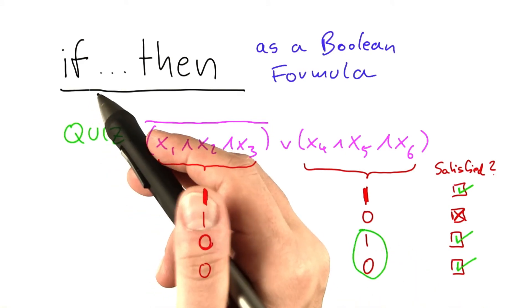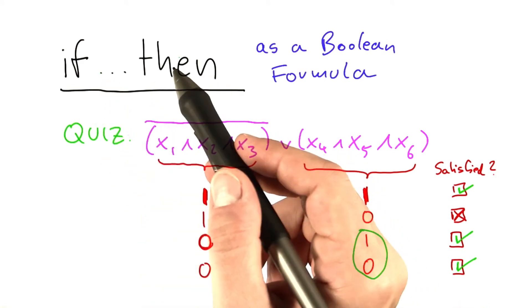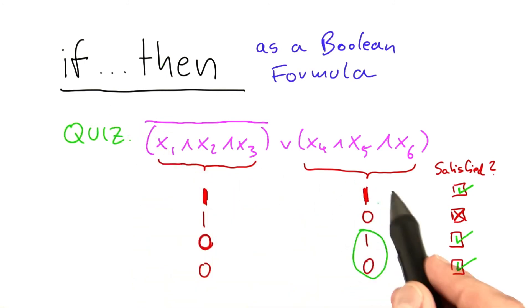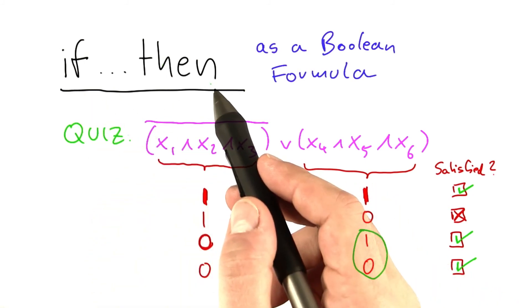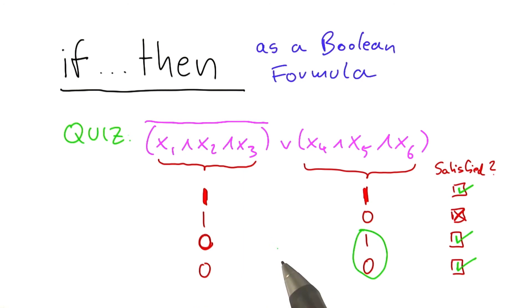And that is exactly how an if-then behaves. If the condition is satisfied, then we want something specific to happen. If the conditions are not satisfied, we don't really care what happens. Or at least we're not really going to force anything to happen.